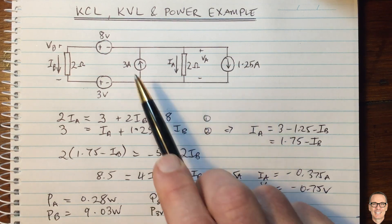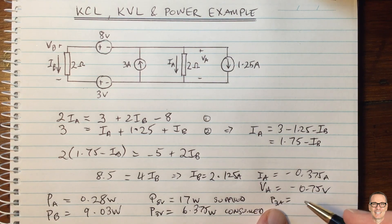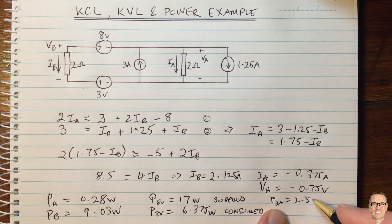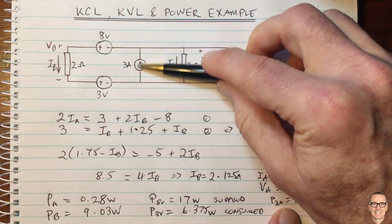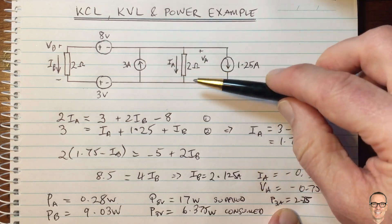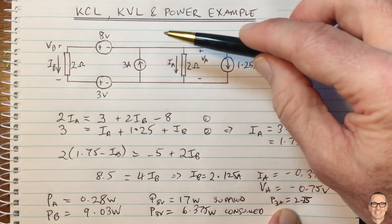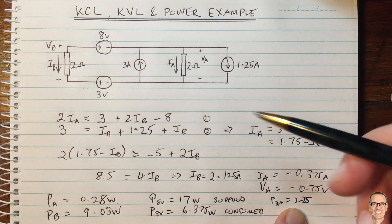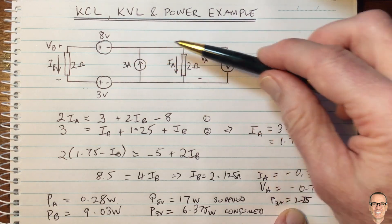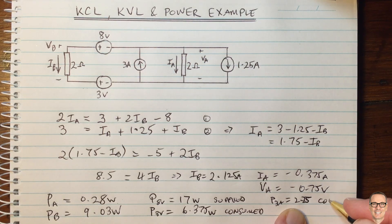And, also, if we think about these current sources, the P for the 3-amp is equal to 2.25, because we can see, and it's 2.25 there, because we can see in the 3 amps, we've got the current, and now we know the voltage, which is VA across there. So we know the current times the voltage. But that is also being consumed, because the current is going in the opposite direction to the polarity of the voltage. So that is also consumed.